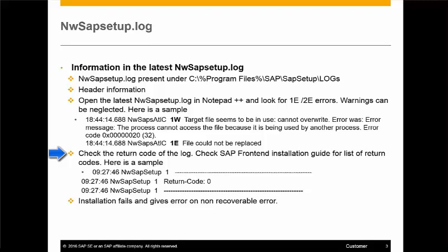Some errors can be recovered. For example, there may be a 1e error with the registration of a DLL that failed and a return code of 129. A return code of 129 means that a reboot is recommended. On reboot, the files that failed to register get registered and the installation completes with the nwsapsetup on reboot installation service log.